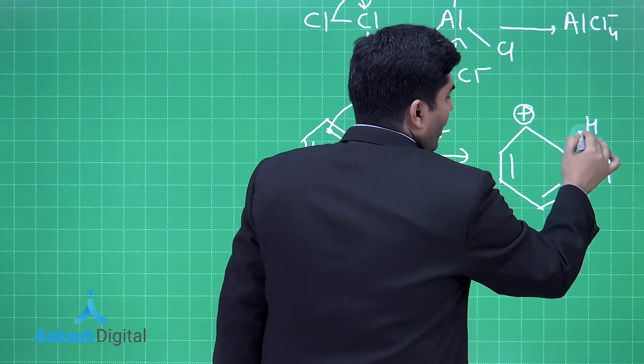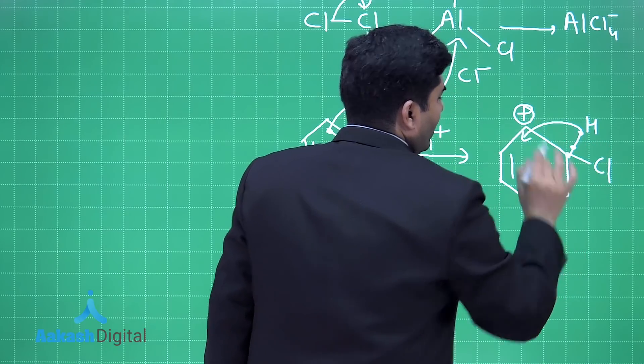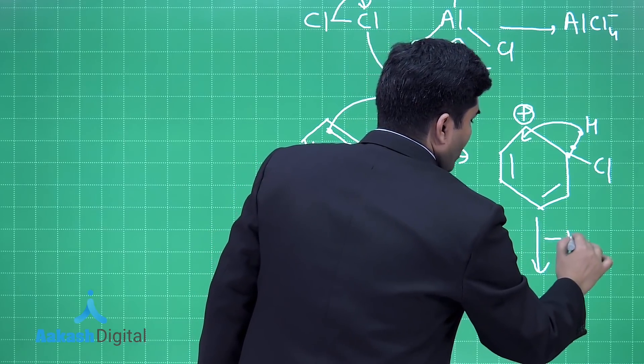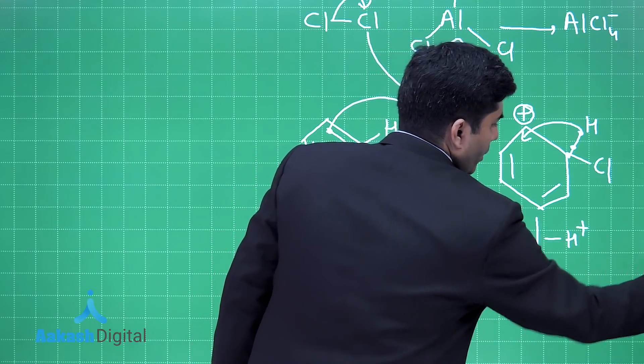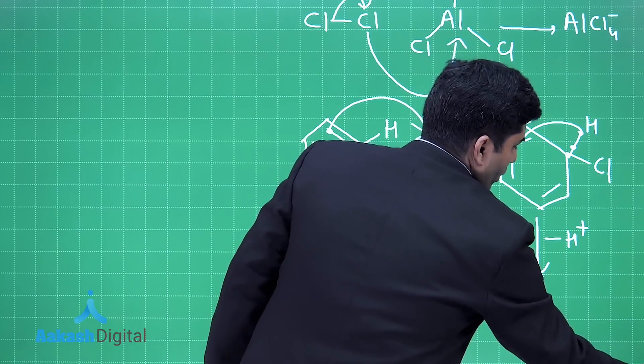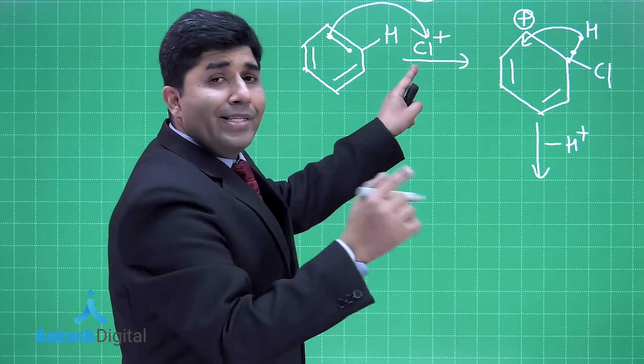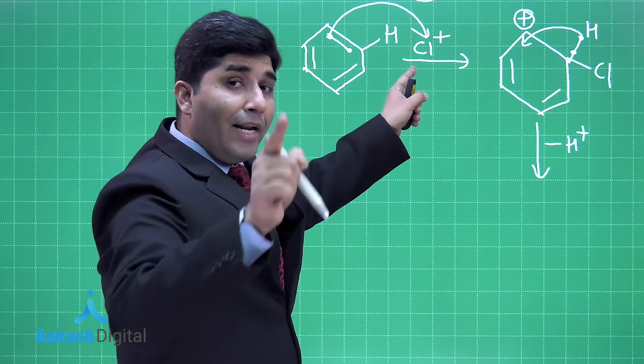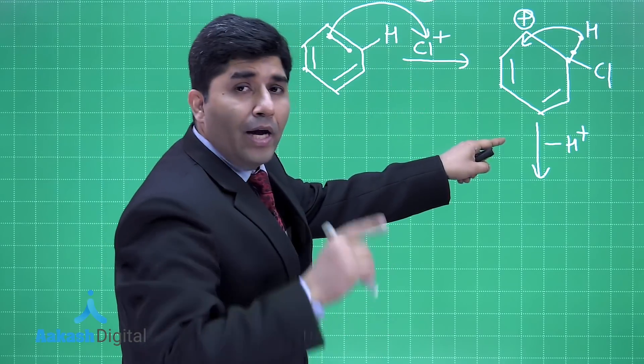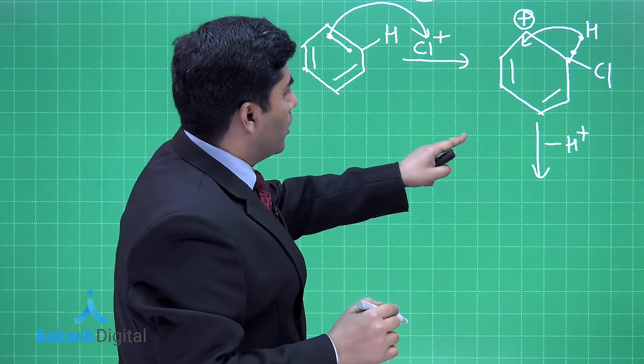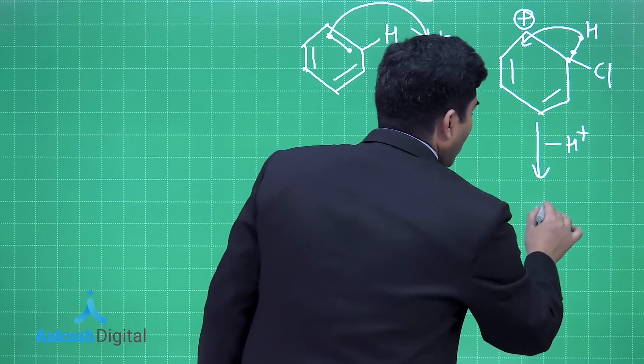And now positive charge is on the carbon atom but hydrogen is more electropositive than carbon, that's why this electron will be here only. Hydrogen will give its electron towards this positive charge and H+ will be removed. Now which species coming in? Cl+ electrophile. Which species going out? H+ electrophile. That's why it is electrophilic substitution reaction.